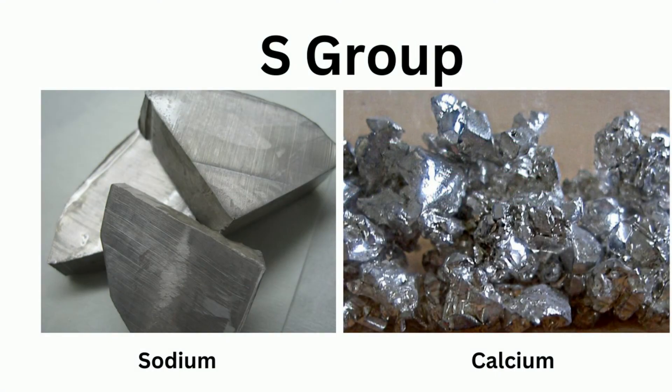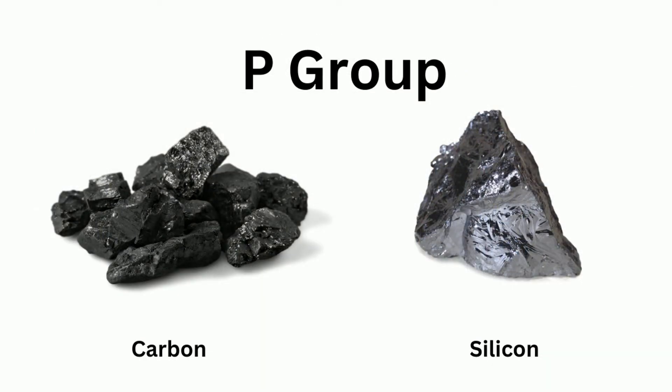The S block contains metals which are reactive, are soft, and have low melting points. The P block contains non-metals and generally form covalent bonds.